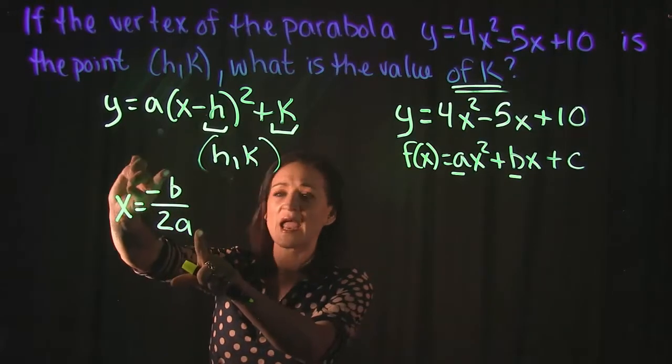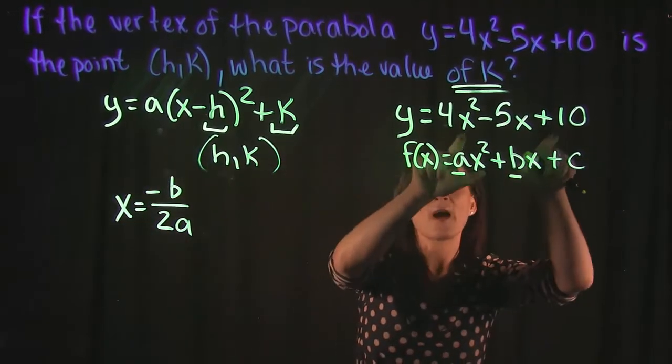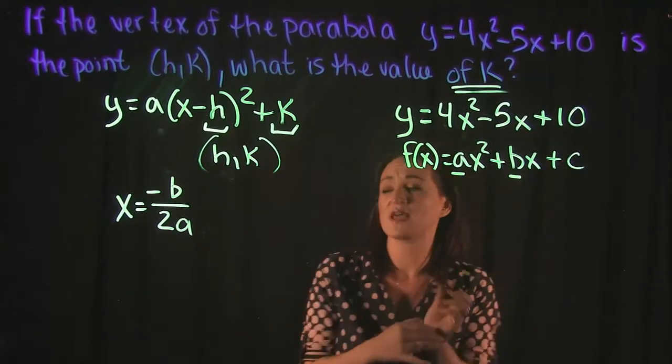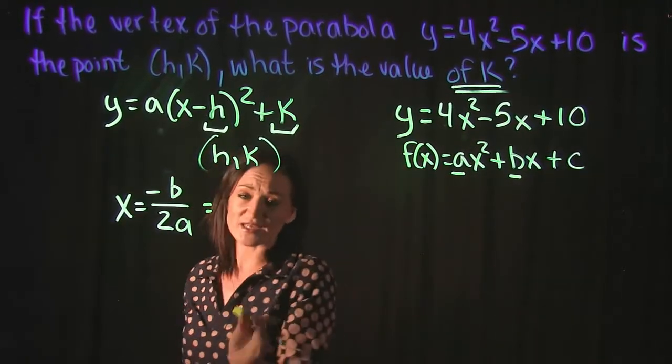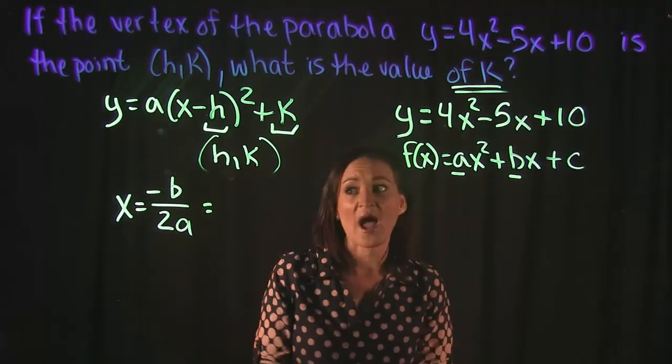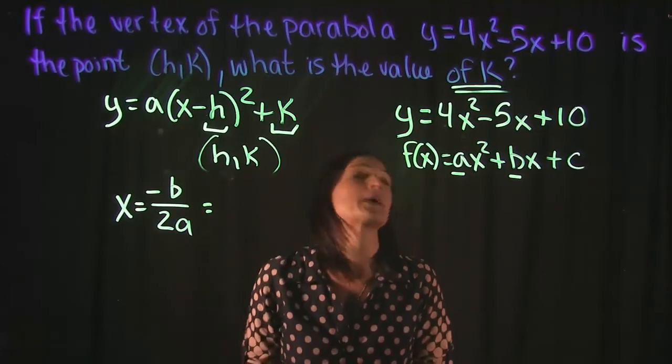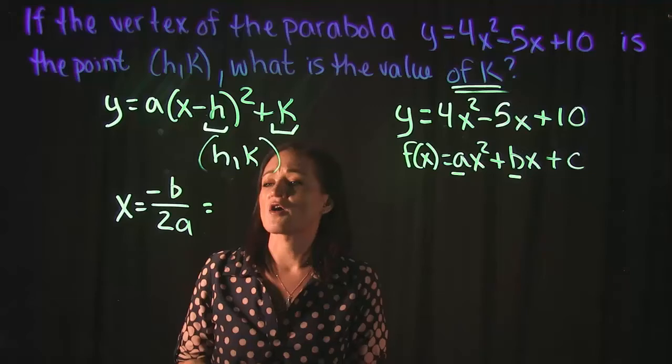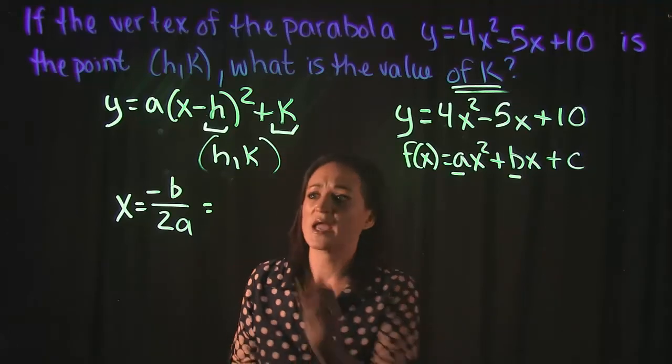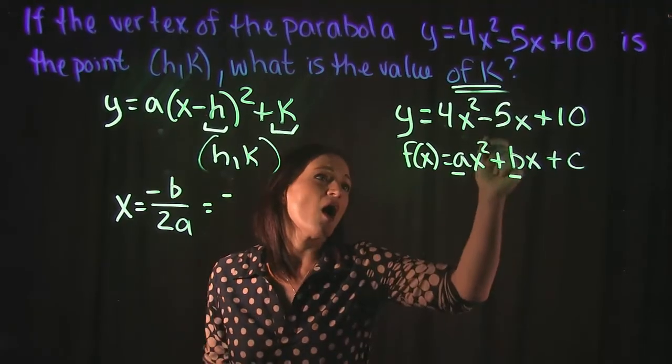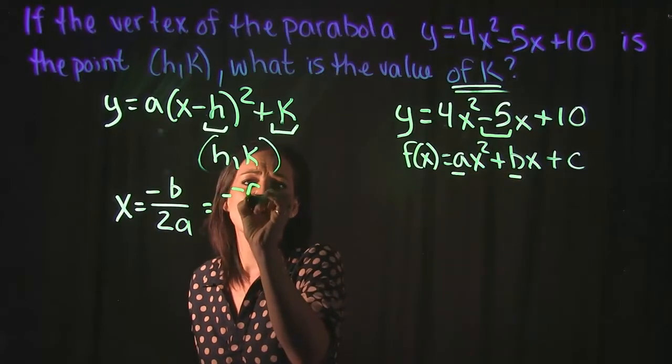We can pull the values a and b directly from our equation, plug them into this formula to find x, and then we'll be able to figure out what y is, which is your k. So our formula is -b/2a. Our b is going to be this -5, the coefficient of your x term.